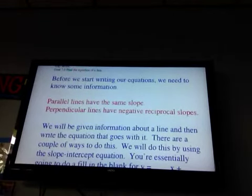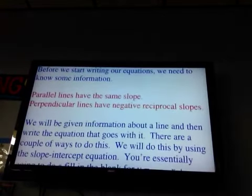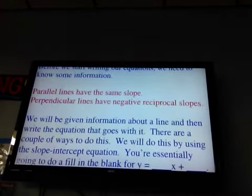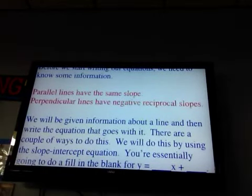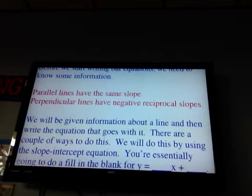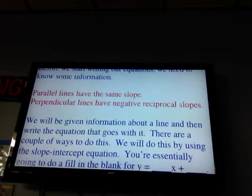Before we can do that, we need to have two pieces of information. What I have in red here, if I have two lines that are parallel, parallel lines are two lines in the same plane that never intersect each other. So they kind of slant the same, they go in the same direction. They have exactly the same slope.